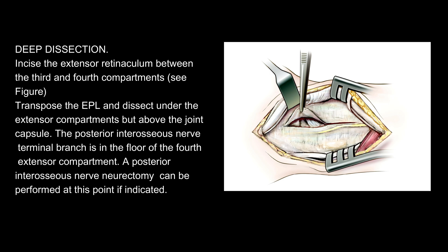Deep dissection: incise the extensor retinaculum between the third and fourth compartments. Transpose the EPL and dissect under the extensor compartments but above the joint capsule.